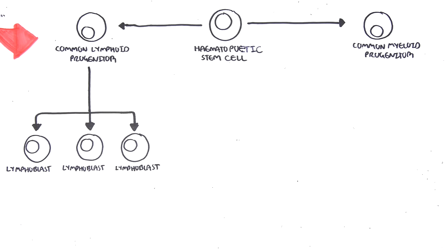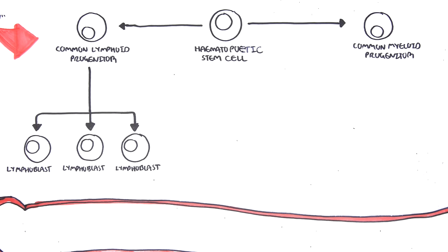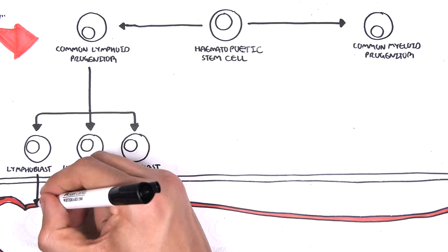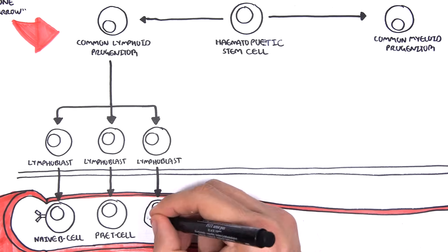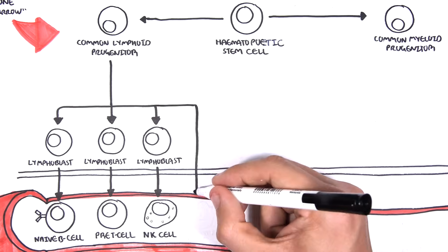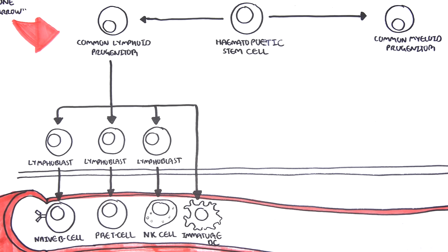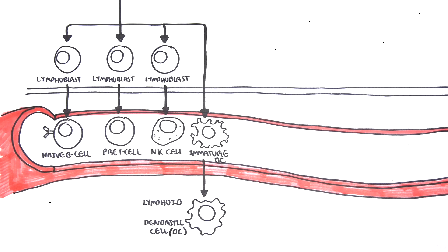This will allow them to form and mature into different types of lymphocytes. Here I'm drawing the bloodstream because as cells exit the bone marrow, they will enter the blood. These different lymphoblasts with different genetic profiles will become either naive B cells, pre-T cells, or natural killer cells. Common lymphoid progenitor cells can also differentiate into certain types of dendritic cells. When formed, they will move into tissues and become lymphoid dendritic cells. Dendritic cells are peripheral antigen presenting cells that are very important in the connection between the innate immune system and the adaptive immune system.